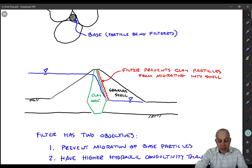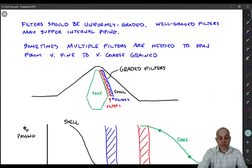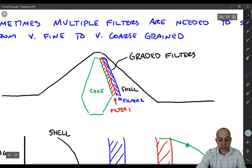And it might not be possible to design a single filter that will filter the clay core without migrating into the granular shell. So in those cases we need graded filters which just involves placing multiple filter zones. So sometimes multiple filters are needed to span from really fine-grained soils to very coarse-grained soils. And that's what I'm sketching here. These are graded filters.